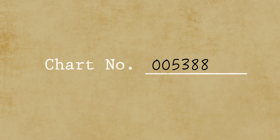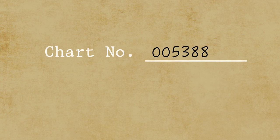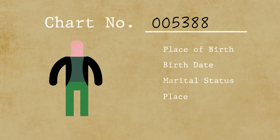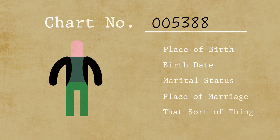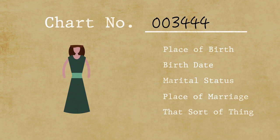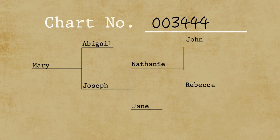The most helpful one that people start out with is an ancestor chart. First of all, you record the number of the chart. Then you put an individual. You note the place of birth, the birth date, married, place of marriage — all those facts. And then you record the father and all the information about the father and the mother, and so on back each generation.